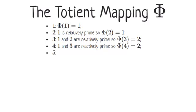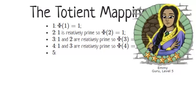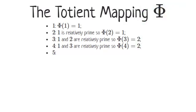Now Phi of five. Five is a prime number, so all the numbers less than it are relatively prime to it. Correct. So Phi of five equals four.